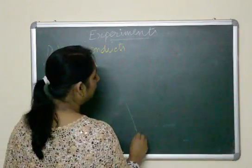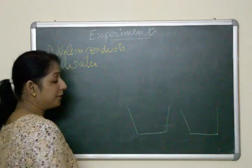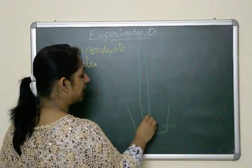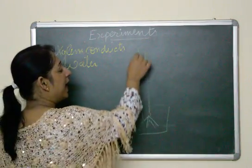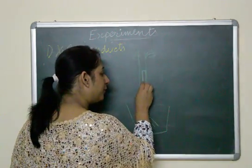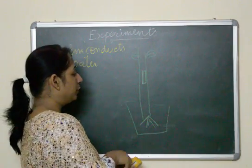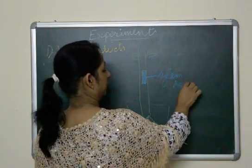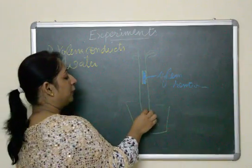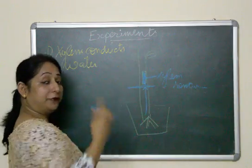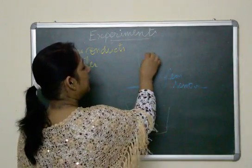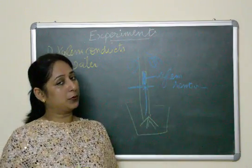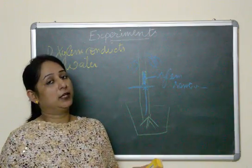The second experiment to prove xylem conducts water uses a potted plant. We remove the xylem from the center of the stem. The roots will absorb water, but the water will stop at that point and cannot reach the leaves. After a few days, the leaves will shrivel and droop, and the plant will die because without water the leaves cannot perform photosynthesis and the plant gets no food.